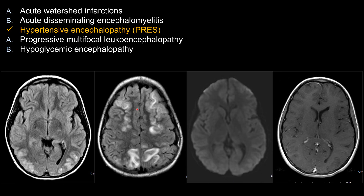Now let's look at the other choices that do not work in this exam. Choice A is acute watershed infarction. At first glance on FLAIR, there is a somewhat watershed-like distribution of signal abnormality, especially anteriorly in the MCA and ACA territory. However, with acute infarction, as you know, there should be restricted diffusion — so choice A is definitely not correct.